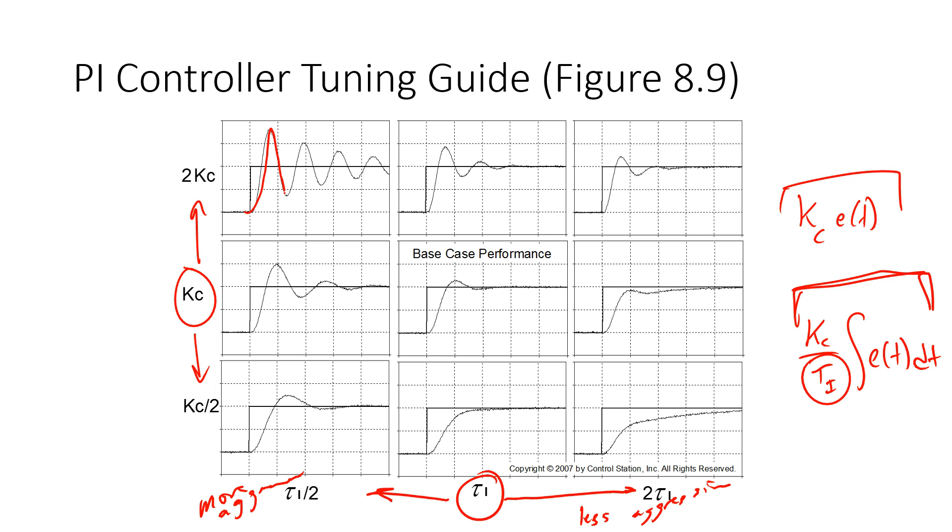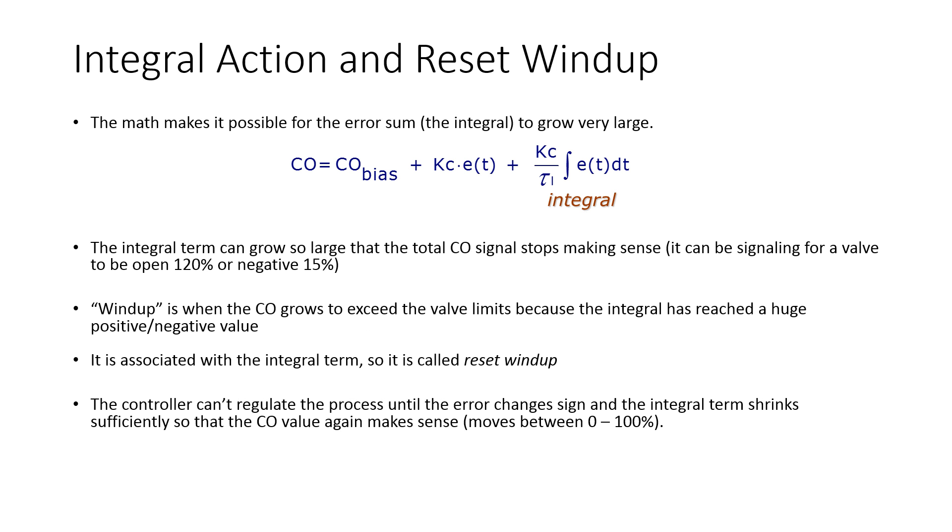In this case, where I have lower tau I and a higher Kc, it's going to oscillate, be very aggressive. And in this case, where I have a lower Kc and a higher tau I, it's going to be the least aggressive of those. This is the integral term, just as a brief introduction.